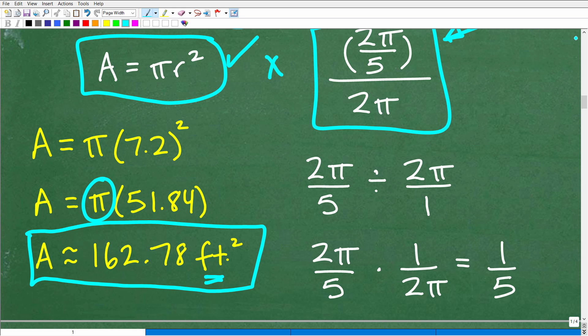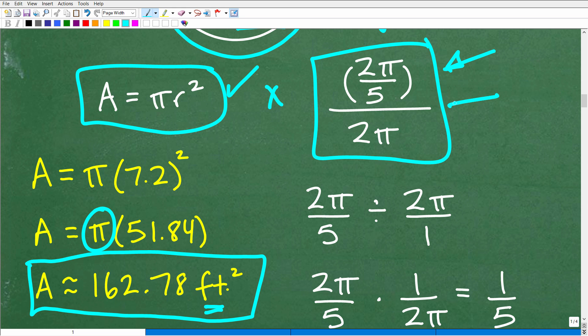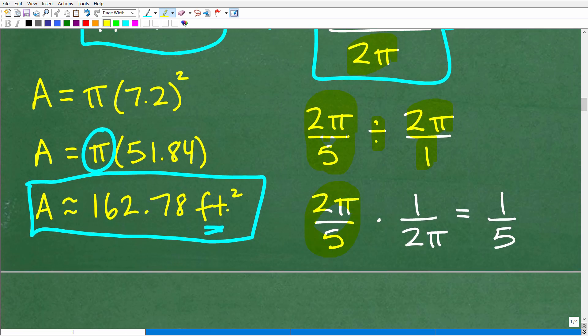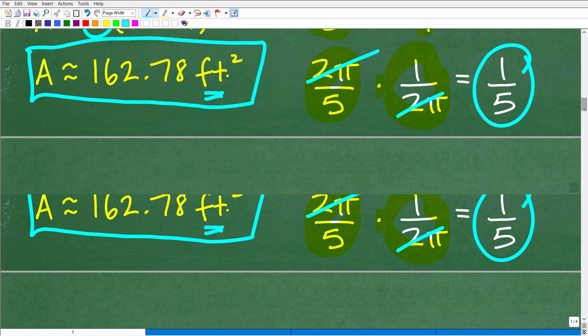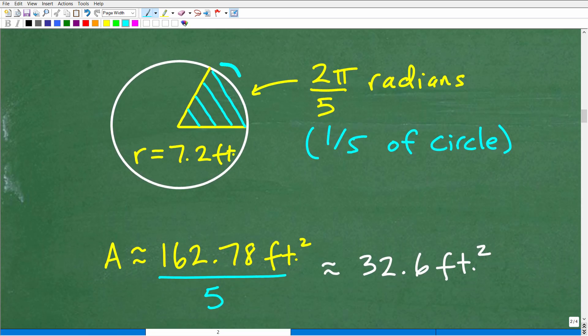So now, going back to this arc setup here that defines the sector, we have to figure out what 2π over 5 divided by 2π is. So 2π over 5 divided by 2π or 2π over 1. This works out pretty nicely here. So this is just 2π over 5. Here's division. That's going to turn into multiplication. We're going to flip this upside down to 1 over 2π. And you can see here that our 2π is cross-cancel. So that's just 1 fifth. So what does that mean? Well, really, that just means that this sector, with the arc length or central angle of 2π over 5, is just 1 fifth of the circle.